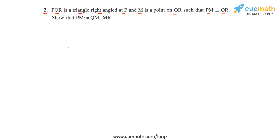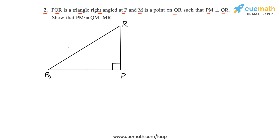Question 2 says: PQR is a triangle right angled at P, and M is a point on QR such that PM is perpendicular to QR. Let's draw a figure corresponding to this statement. Here's a right angled triangle PQR, right angled at P. We take a point M on side QR, which is the hypotenuse, and drop a perpendicular from vertex P onto QR. The foot of the perpendicular is point M, so PM is perpendicular to QR.